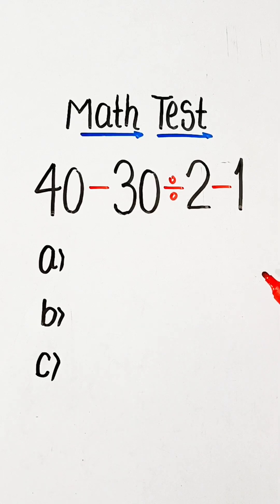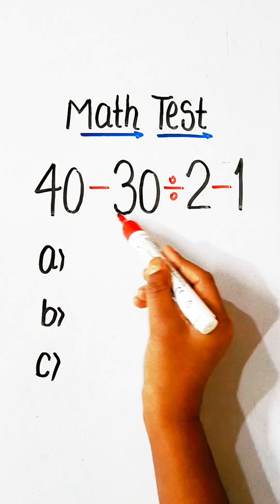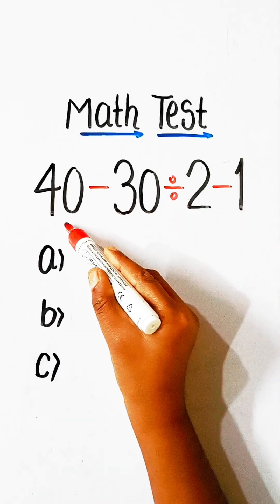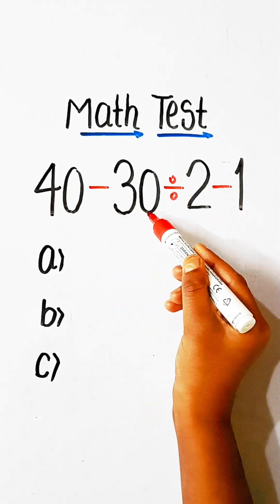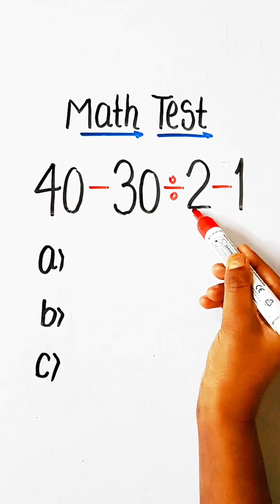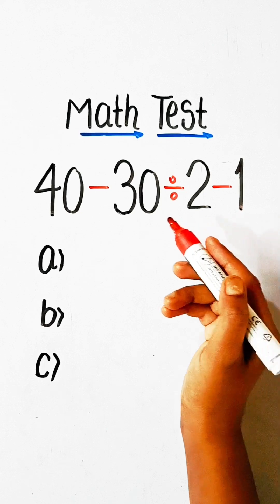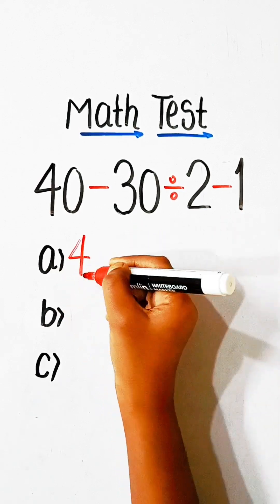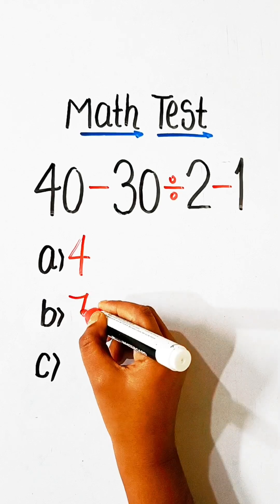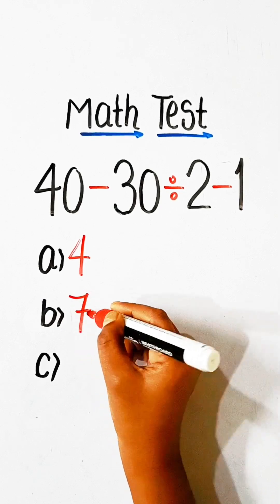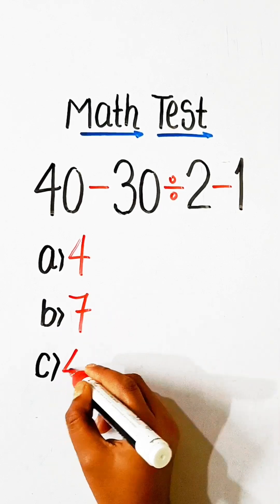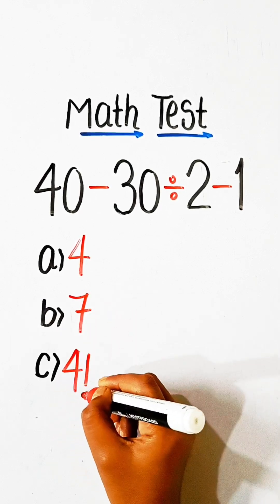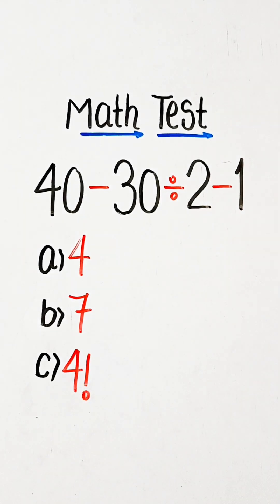Hello everyone! In this video we will try to solve this math expression: 40 minus 30 divided by 2 minus 1 equals what? Option A: 4, Option B: 7, Option C: 4 factorial. Comment your answer, then we will try to solve this.